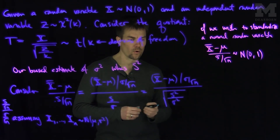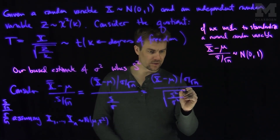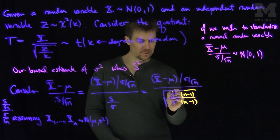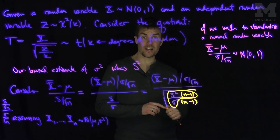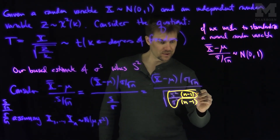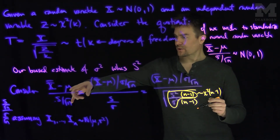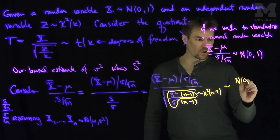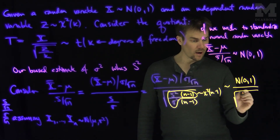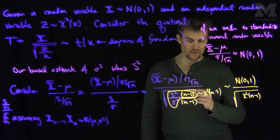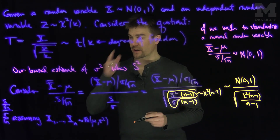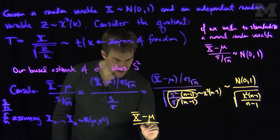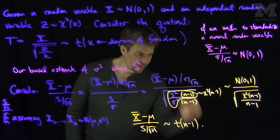Now I'll put a factor of n minus one on the top and n minus one on the bottom under the square root. The ratio s squared over sigma squared times (n minus one) is chi-squared with n minus one degrees of freedom. So this ratio — x̄ minus mu over s root n — has the form of a Normal(0,1) random variable over the square root of a chi-squared with n minus one degrees of freedom, divided by n minus one. Therefore, x̄ minus mu over s root n follows a t-distribution with n minus one degrees of freedom.